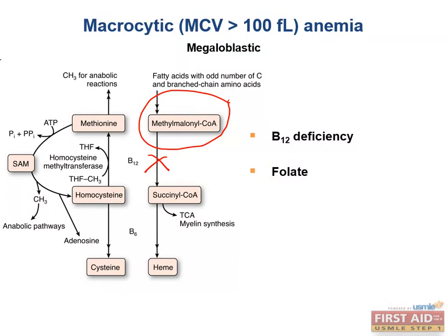You might recall our discussion of orotic aciduria from biochemistry. It results from a genetic mutation in an enzyme from the synthetic pathway of uridine. It causes megaloblastic anemia that does not correct with the administration of folate or vitamin B12. Instead, you would give these patients uridine monophosphate, which bypasses the defective step and allows DNA synthesis to proceed.